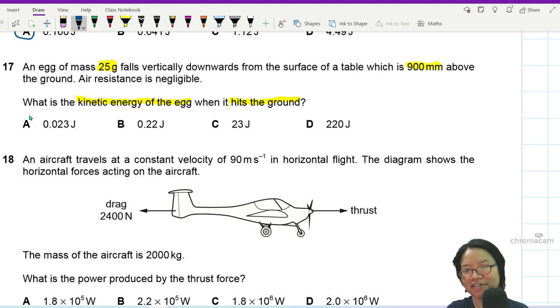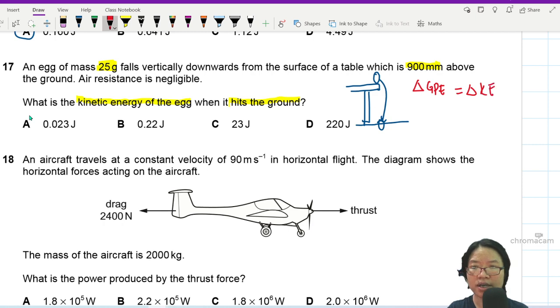Well, if the egg falls from the table to the ground and splatters everywhere and you have to clean up, I can say that it loses KE. So I'll go change loses KE, but it loses GPE. So change in gravitational potential energy is equal to the change in kinetic energy.